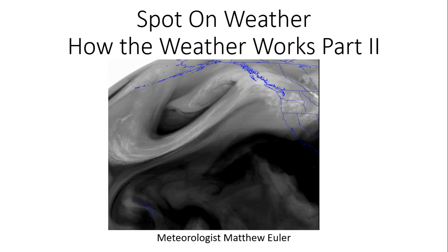The image to start today's training video is what's known as a water vapor satellite image. The darker areas correspond to drier areas of the atmosphere, while those lighter, brighter colors translate to moist air in the atmosphere. The atmosphere is a three-dimensional fluid with a lot of various motion going on — not only at the surface where we live with wind, but also higher aloft, above the surface where we live. Let's go right into today's training: How the Weather Works, part two.